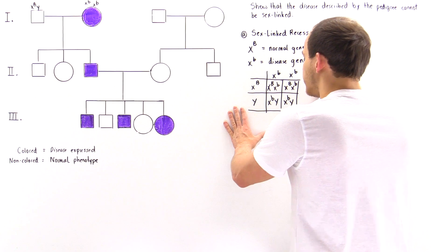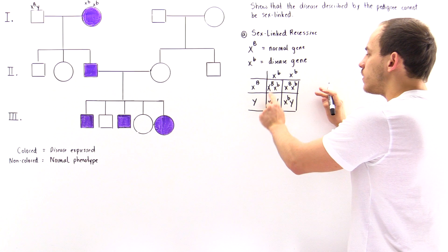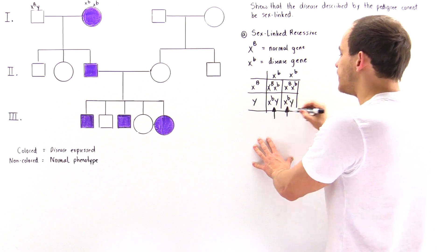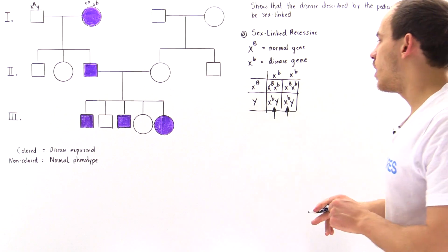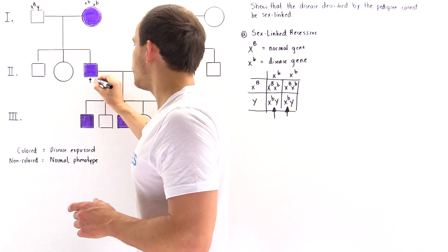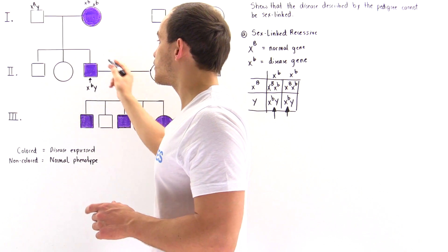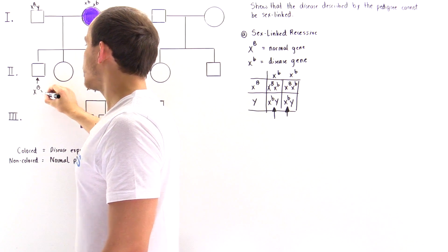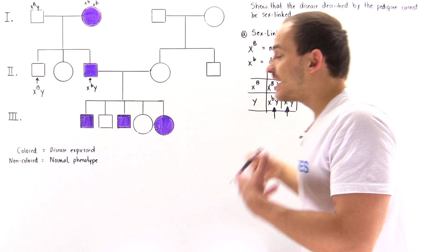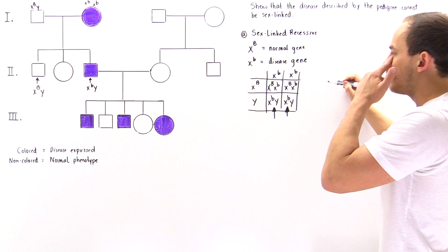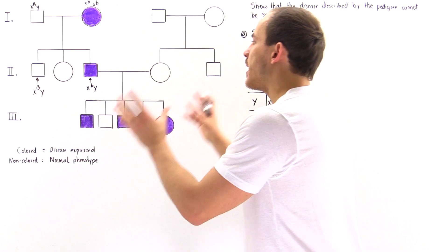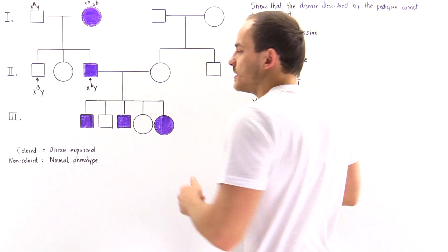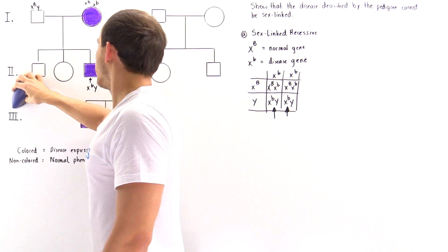Notice what this Punnett square tells us: 100% of the male offspring produced must exhibit that particular disease phenotype, because we have X lowercase b, Y and X lowercase b, Y. That is consistent with this affected male individual, but this normal male individual must be X uppercase B, Y — and that genotype cannot exist from this cross. So this pedigree cannot describe a disease that is sex-linked recessive, due to this inconsistency between the pedigree and Punnett square analyses.